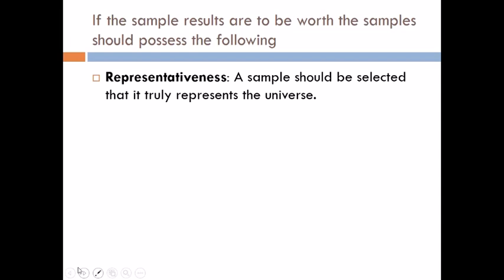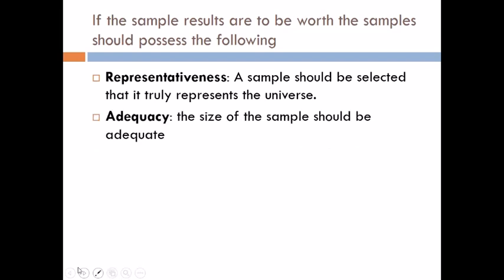Next is adequacy. The size of the sample is very important. You can simply pick a sample from a population, but the size or the number of items in the sample that you choose should be adequate; otherwise, it may not represent the characteristics of the universe or population.